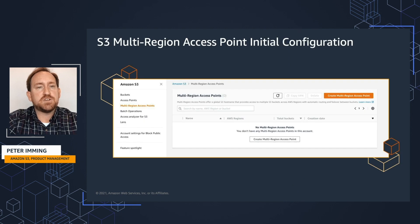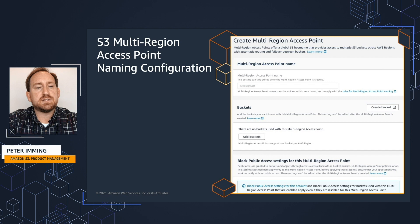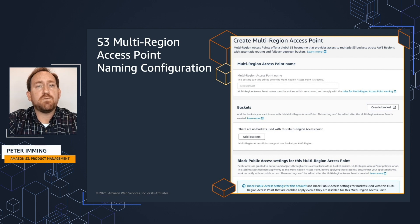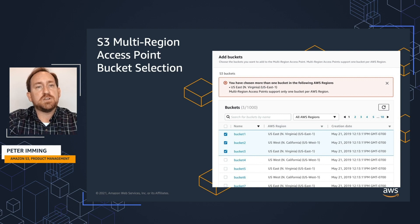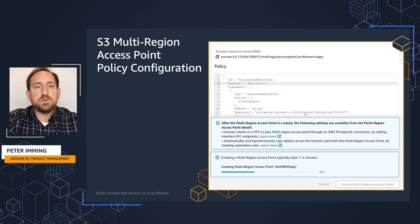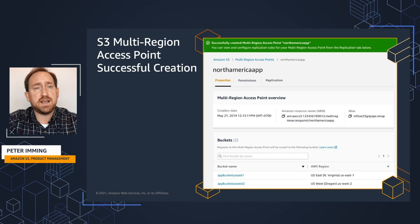Let's configure a multi-region access point. We start with the create multi-region access point screen, where we choose a name. There will be two names — one that you generate, and one that will be assigned to guarantee uniqueness. You then choose which buckets to include, one bucket per region. If you select more than one bucket from the same region, an appropriate message will be displayed. You'll attach an IAM policy to configure the access controls, and then you'll see the multi-region access point completing successfully on top of the buckets you've selected.